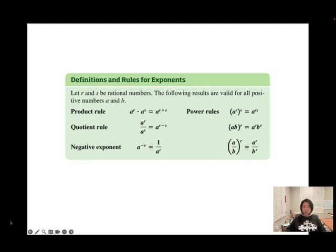Definitions and rules for exponents: let R and S be rational numbers — that means fractions, integer over integer. We can still apply the product rule: same base, add exponents. The quotient rule: same base divided, subtract exponents. Negative exponent: flip to the denominator. The same power rules apply with rational exponents.